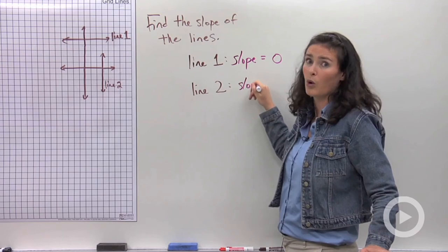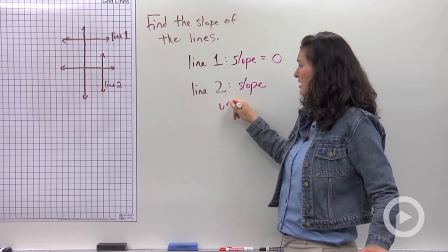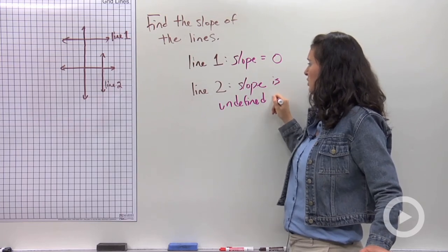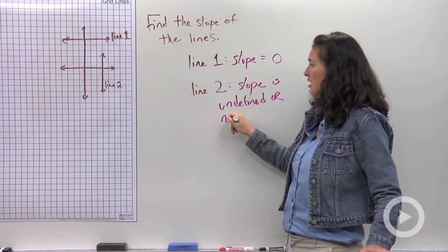So the slope for line two, or any vertical line, is undefined. You can write 'slope is undefined' or the words 'no slope.'